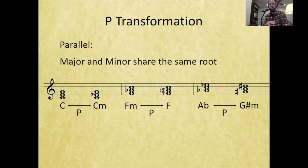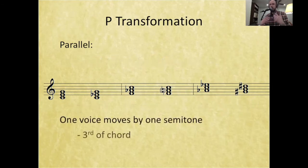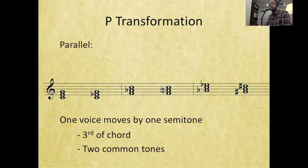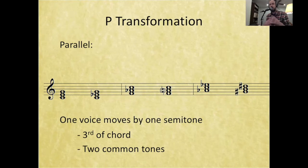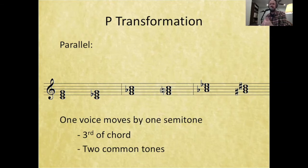The P transformation is parallel major to minor, and it works both directions. Focusing on parsimonious voice leading: one voice moves by one semitone—specifically the third of the chord. In F minor, the third moves up a half step from A flat to A natural, and we end up with two common tones. Even in A flat major to G sharp minor, which looks completely different, the only difference is that one semitone movement in the third. This takes familiar ideas—parallel major to minor—and applies them to access seemingly unrelated triads.